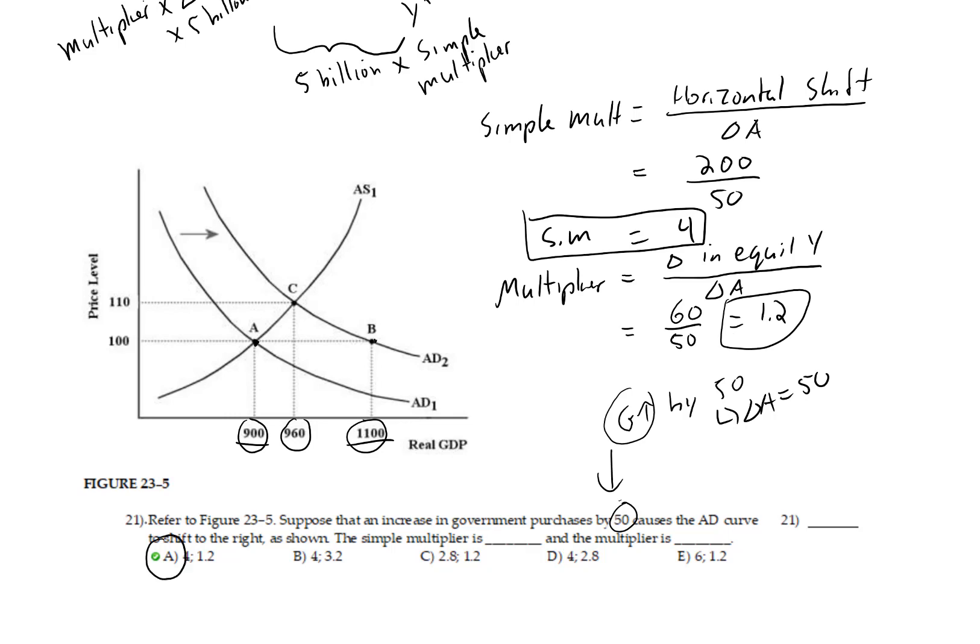That corresponds to answer A. The correct answer is already highlighted there, but this is how you calculate both the simple multiplier and the multiplier using the AS-AD diagram.